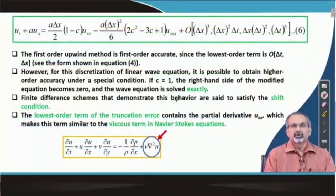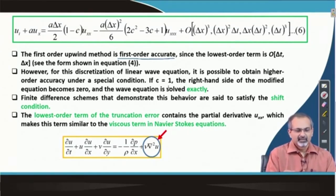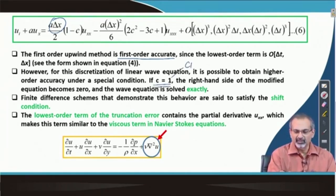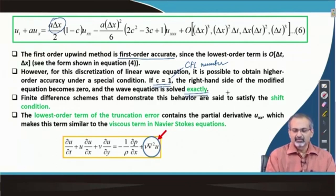We see that the first order upwind scheme is a first order accurate scheme both in space and in time — that is obvious from the leading error term. We also notice a very interesting property: if you set C equal to 1, that means the CFL number is set equal to 1, then all the terms in the truncation error seem to vanish. That is a very important property — it means you are going to solve the linear wave equation exactly in that case, with no error terms at all.